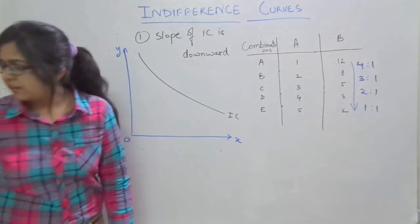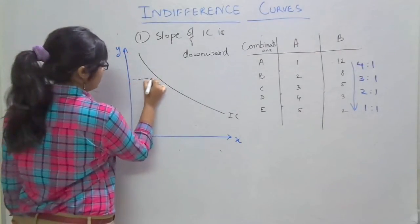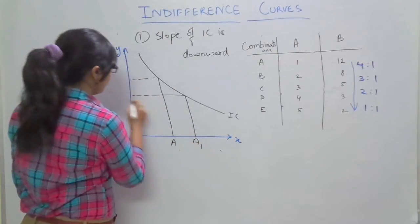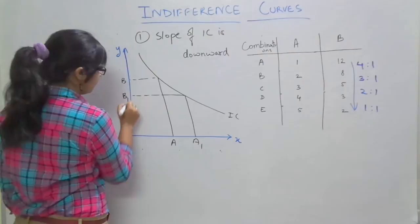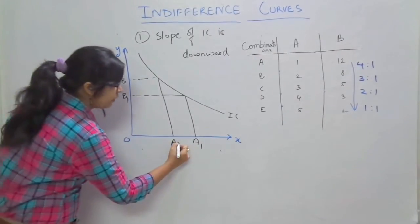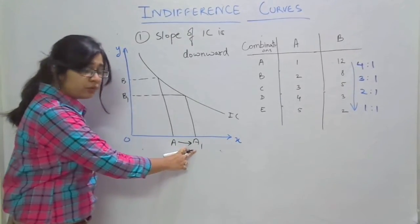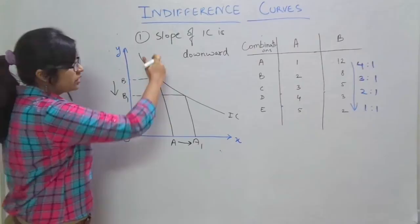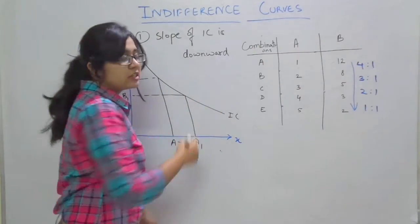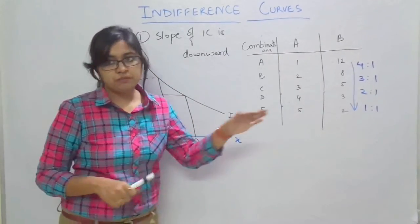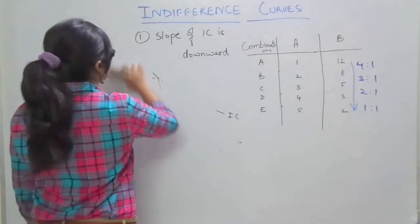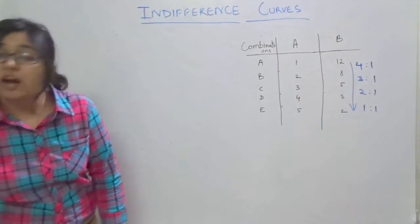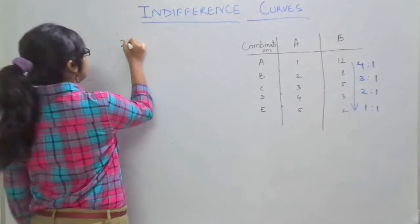Graphically, if we take points A and A1 on the x-axis and B and B1 on the y-axis, we can see clearly that for an additional unit of good A, we need to decrease or sacrifice some units of good B, which shows substitution. That is why the indifference curve is always declining to the right. Now let's move to the second property.